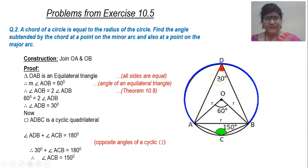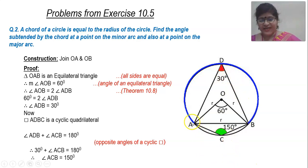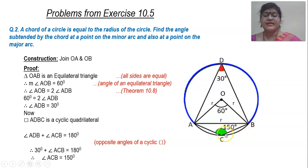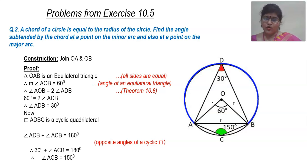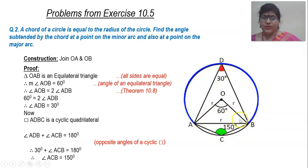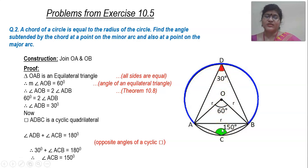Now that you have angle ADB as 30°, which is an angle in the major arc, how do you find the measure of the angle in the minor arc, angle ACB? If you look at quadrilateral ADBC, it is a cyclic quadrilateral. In a cyclic quadrilateral, the sum of opposite angles is supplementary. So 30° plus what gives 180°? Therefore, the measure of angle ACB equals 150°. Summary: join OA and OB to get equilateral triangle AOB; central angle is 60°; angle ADB becomes 30°; and the opposite angle ACB is 150° because it is the opposite angle of a cyclic quadrilateral.